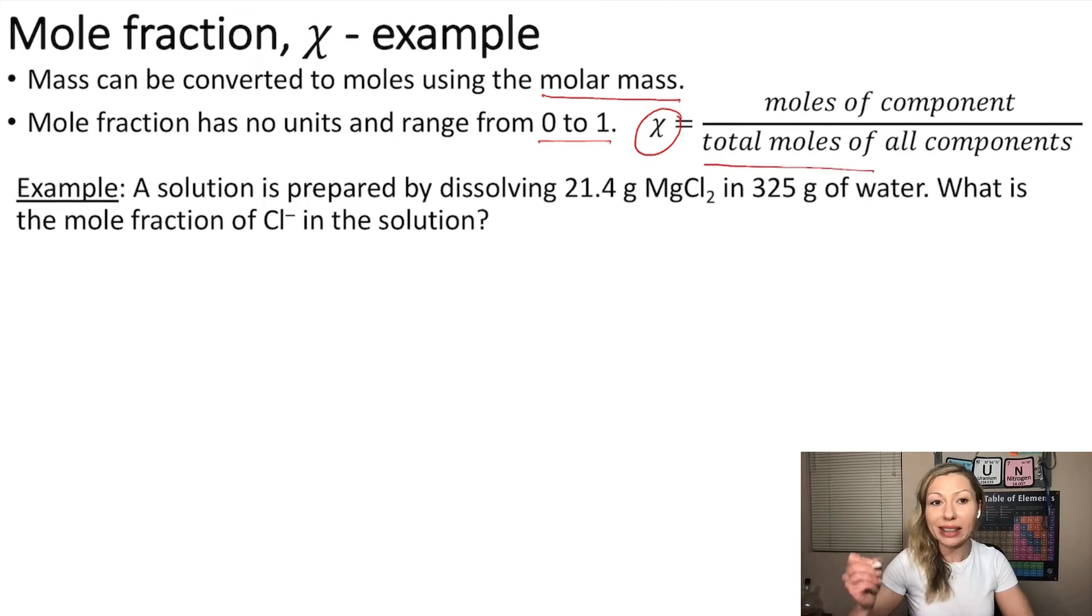Let's do a practice problem. A solution is prepared by dissolving 21.4 grams of magnesium chloride in 325 grams of water. What is the mole fraction of chloride ions in the solution?